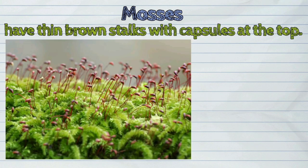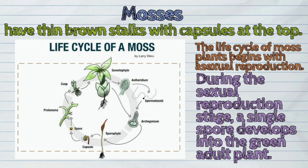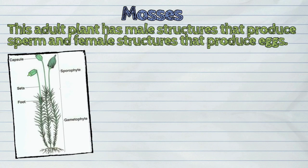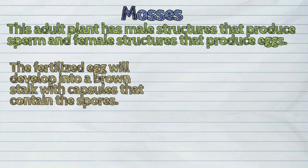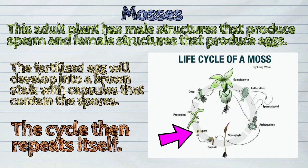Mosses have thin brown stalks with capsules at the top. The life cycle of moss plants begins with a sexual reproduction. During the sexual reproduction stage, a single spore develops into the green adult plant. This adult plant has male structures that produce sperm and female structures that produce eggs. The sperm is carried by water to the female structure where fertilization will occur. The fertilized egg will develop into a brown stalk with capsules that contain the spores. The cycle then repeats itself.